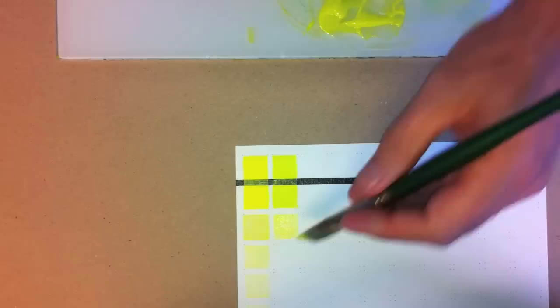This is the basic procedure. Just follow this for the rest of the rows and columns and you'll be on your way towards completing your first color chart.